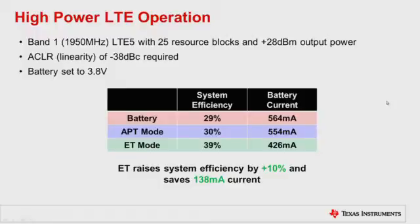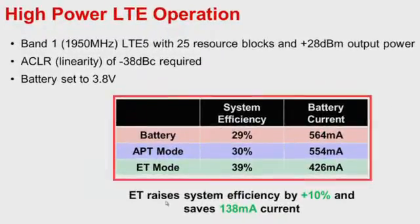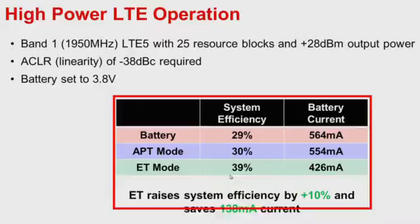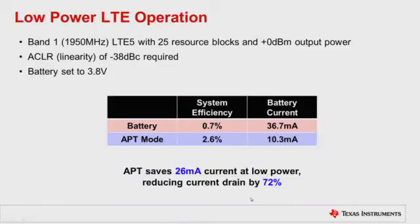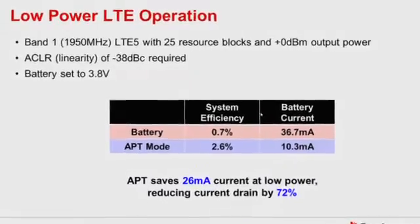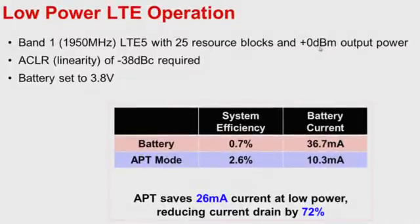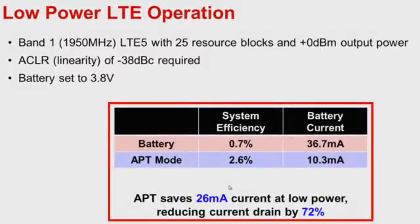A careful measurement of system efficiency indicates that as compared to battery operation, envelope tracking operation improves system efficiency by 10 percentage points. That's a 138 milliamp current savings. In low power LTE operation, not measured here, at 0 dBm output power, we save 26 milliamps, but that's a 72% reduction in battery current requirement.